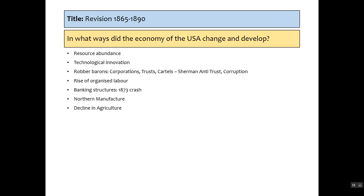How does the economy change? America is an abundant resource — we've got the gold mines, the silver rush, technological innovation, and the growth of the robber barons. People like Rockefeller are now amounting huge personal wealth, leading to corporations, trusts, and cartels. By the end of the period, people are fed up with the corruption, so we've got the Sherman Antitrust among other things. We've got the rise of organized labor and the railway strikes of 1877. Banking structures change in response to the 1873 crash. Northern manufacture becomes the powerhouse of America — no longer agriculture. More people are living in cities than in rural areas, leading to the decline of agriculture. In the south, cotton is still king, but in the west it is no longer profitable to be a small or medium-sized farm — you have to be part of a big business.